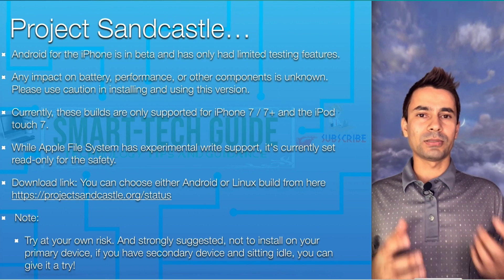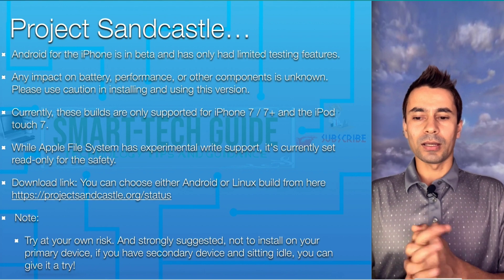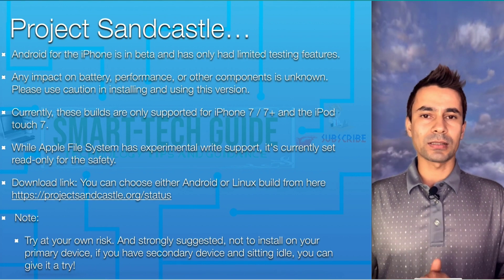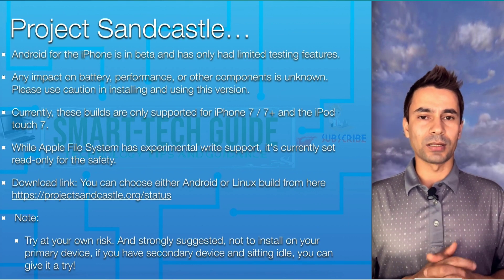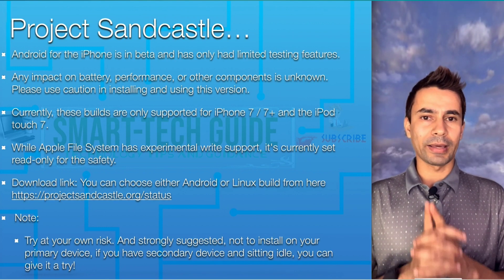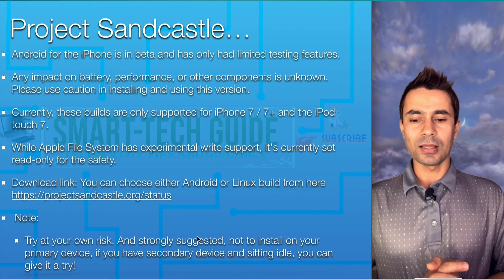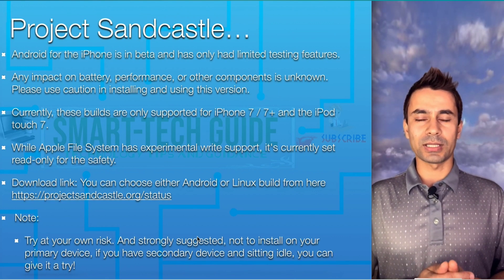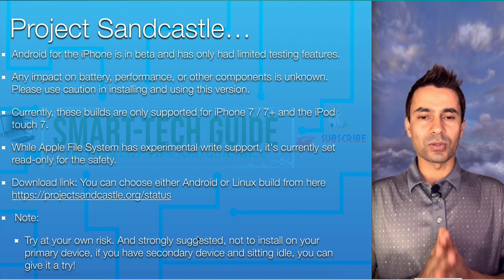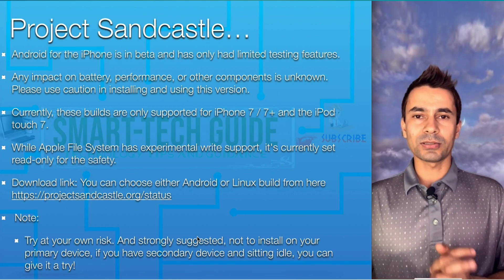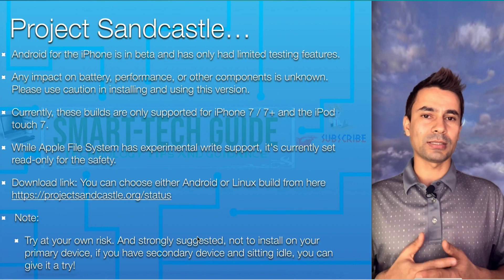If you are using it as your primary device, think twice before installing. While the Apple file system has experimental write support, it is currently set to read-only for safety. You can download the Android and Linux build from the link I'll provide in the description section: projectsandcastle.org/status. Try at your own risk — if you have a secondary device, feel free to try it, because even if it breaks you don't need to worry. But if you have only one device and that's your primary device, proceed carefully.